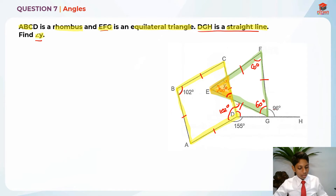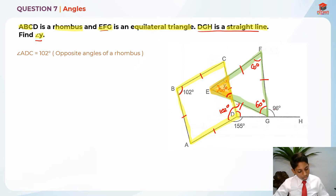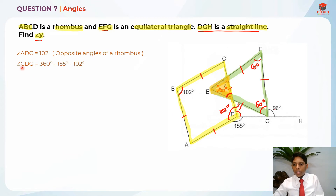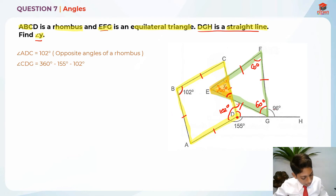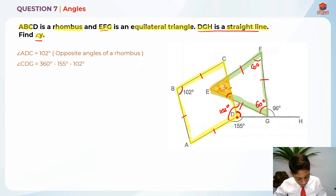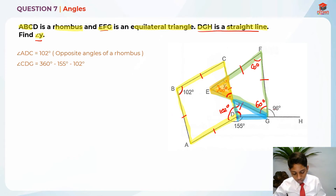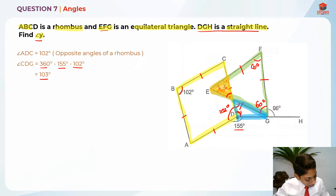First, let's find this angle. We know that ADC equals 102 degrees because of opposite angles in a rhombus. In order to find angle CDG, I'm going to use 360 degrees — angles at a point. So: 360 minus 155 minus 102 gives us 103 degrees.